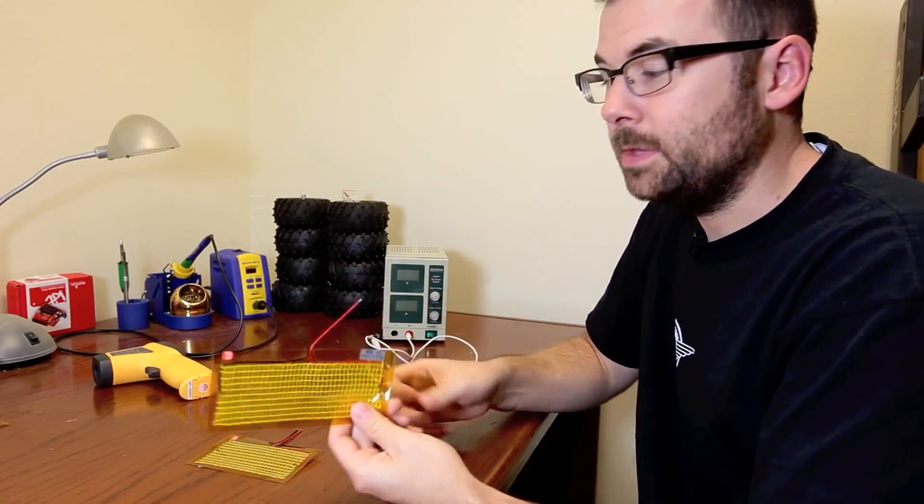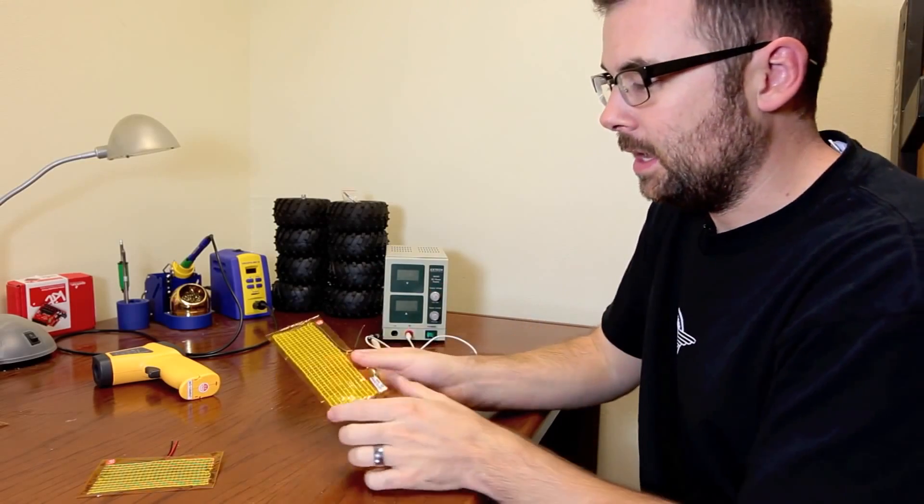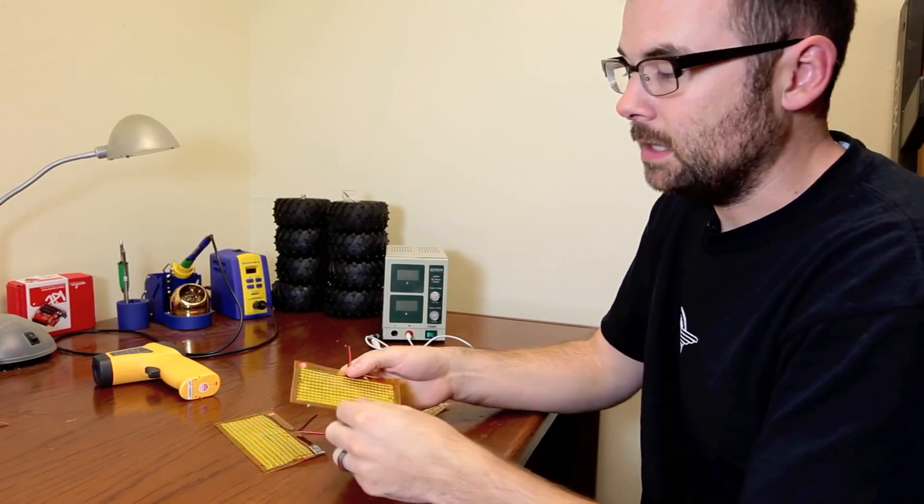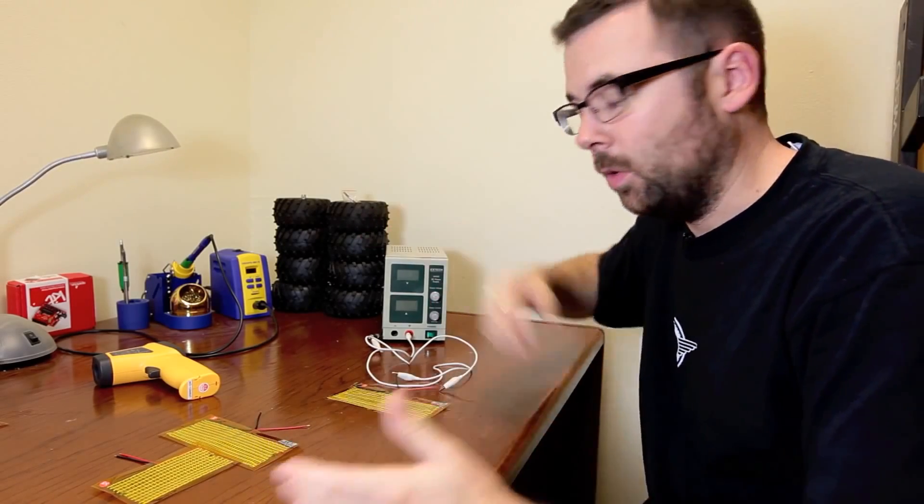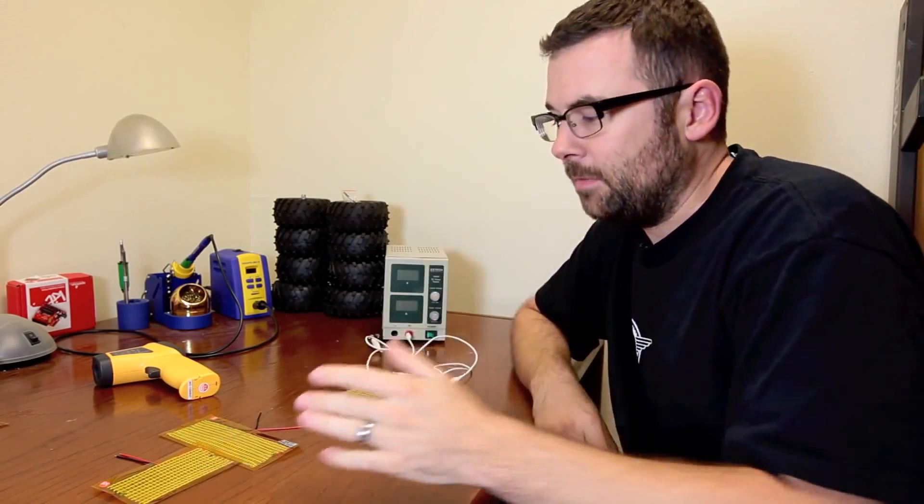So here we are in my office where we're going to talk about our first two products. These are heating pads. We've got them in two different sizes: a 5 by 15 cm and a 10 by 5 cm. These are spec'd to work at around 3 to 5 volts. The manufacturer does state, do not specifically go above that, but that's why we're here. We're going to show you what happens.